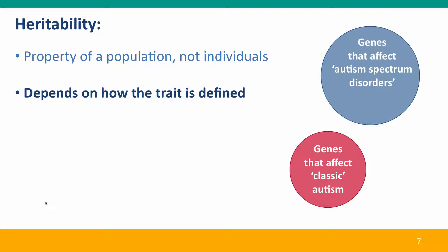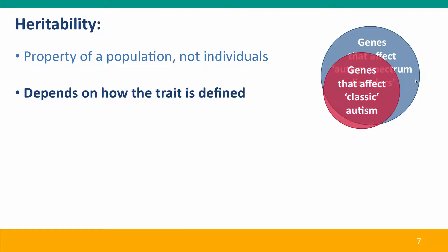Heritability depends critically on how the trait is defined. For example, genome-wide association studies for genes linked to autism depend very much on what definition of autism the researchers use. Using a classic definition of autism identifies one set of genes, whereas using a more modern definition of autism spectrum disorders — including more mild psychiatric problems — will identify a larger group of genes. Most of the genes identified in classic autism will also be identified in a study of autism spectrum, but some won't.